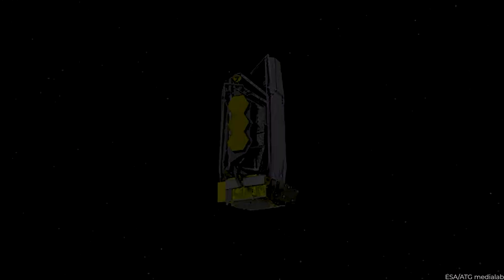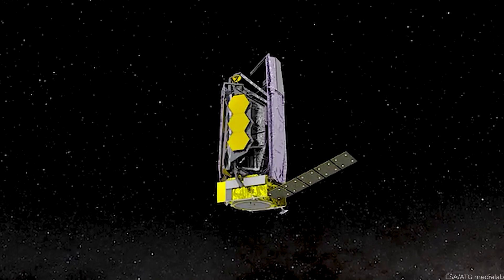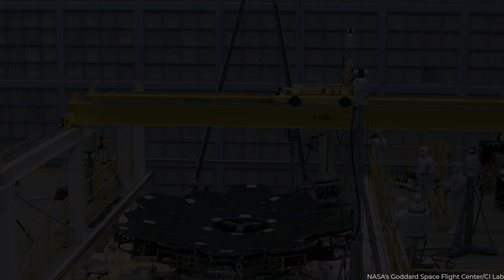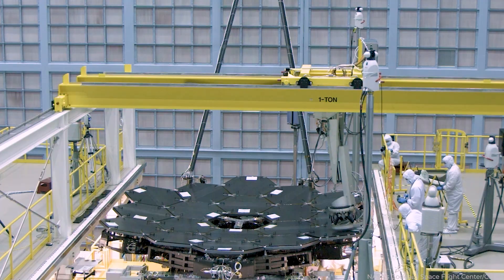It features a segmented mirror that unfolds after launch to fit into the Ariane 5 rocket bearing. The JWST features a five-layered sunshield comprised of a substance that reflects and dissipates the sun's radiation to protect the telescope from the heat of the sun. The sunshield will maintain the telescope at very low temperatures, which will be required for infrared investigations.